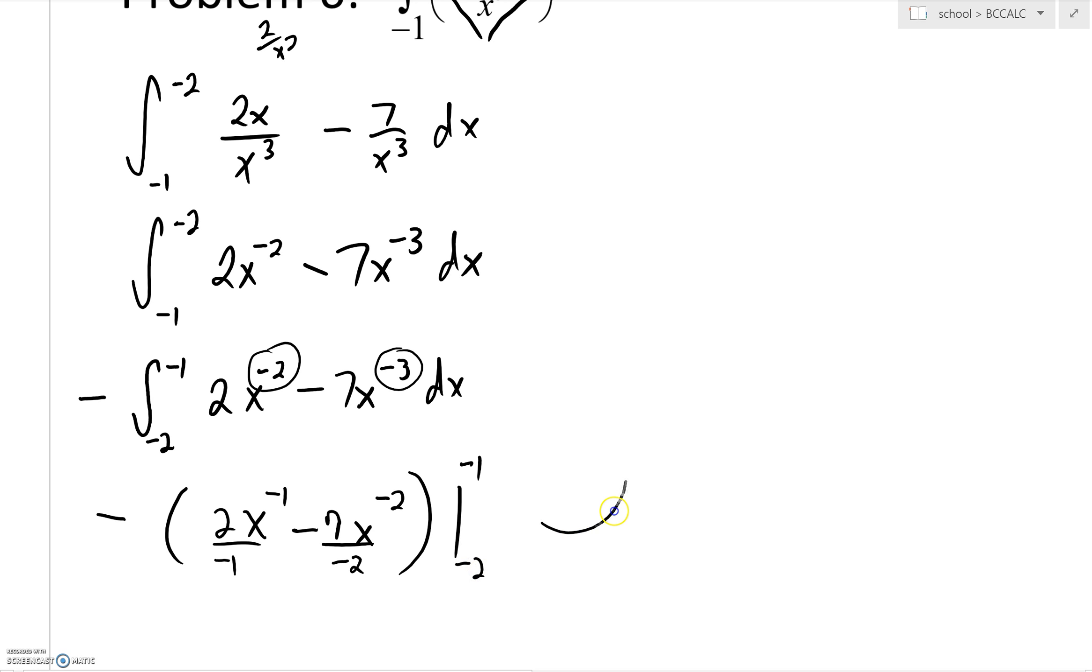Well, I'm going to do some cleaning up right now. We still have this minus out in front. And this becomes negative 2 all over an x. A minus and a minus turn into a plus. So that's 7 all over 2. But then we'll have x squared down below. And we're going to evaluate that between negative 1 and negative 2.